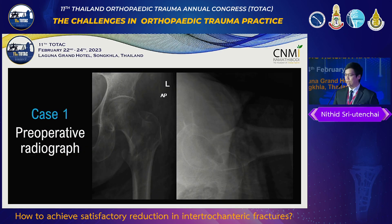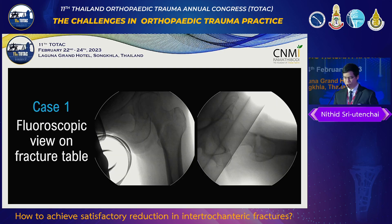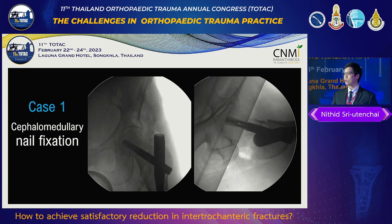Let's start with the first case — a simple fracture where the patient undergoes surgery on the fracture table. After the patient was settled and reduction was performed, the fracture came into good alignment. Fixation was then continued with a cephalomedullary nail.